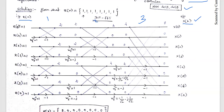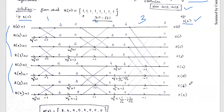In bit-reversed order, the first input line is X(0), second is X(4), then X(2), X(6) — so the first four inputs are even-indexed values and the next four are odd-indexed. Since all amplitudes are equal to 1, the input applied to all eight lines is simply 1. The output from the DIT algorithm is in natural order: X(0), X(1), X(2), up to X(7).